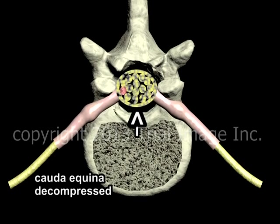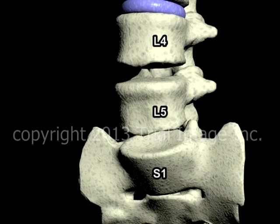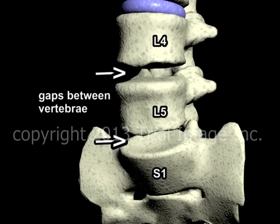Removal of the disc relieves pressure on the nerves or cauda equina. However, it also leaves a gap where the disc used to be between the two vertebra. In this particular case, discs were removed at both the L4-5 and L5-S1 levels, and so there are two gaps between three vertebra, as shown here.